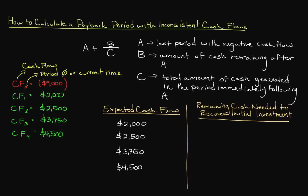In the first period we subtract $2,000 from $9,000 to get $7,000, meaning after the first period we still need $7,000 to cover our initial investment. In the second period we subtract $2,500 from $7,000 to get $4,500. For year 3 we subtract $3,750 from $4,500 to get $750.